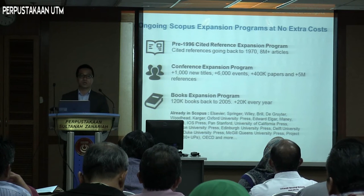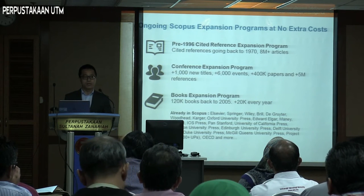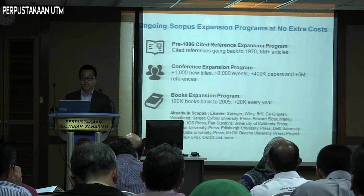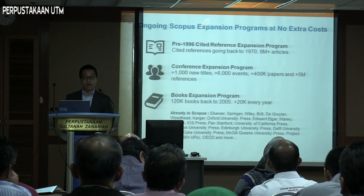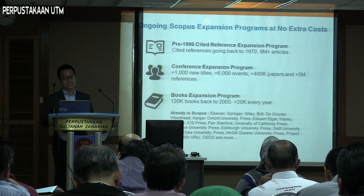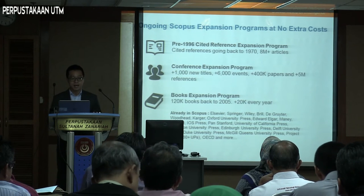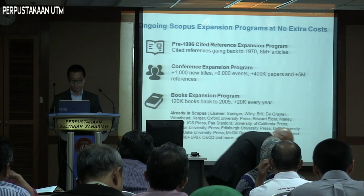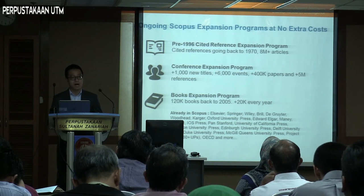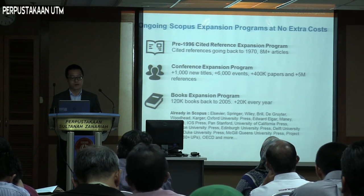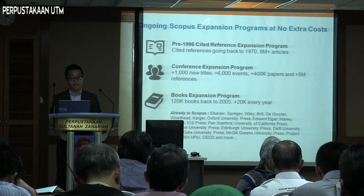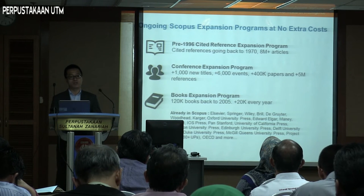Scopus is constantly expanding and building. There's an ongoing Scopus Expansion Program at no additional cost to users. The Pre-1996 Cited References Expansion Program goes back to the 1970s and provisions up to 8 million more articles. The Conference Expansion Program represents 1,000 new titles for 6,000 events, adding 400,000 papers and up to 5 million references. The Books Expansion Program adds approximately 122,000 books back to 2005, with at least 2,000 book titles added every single year.